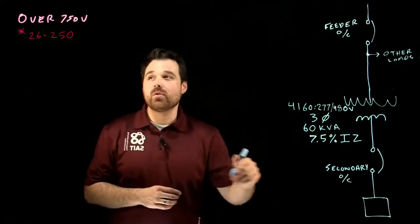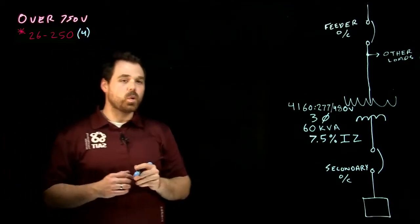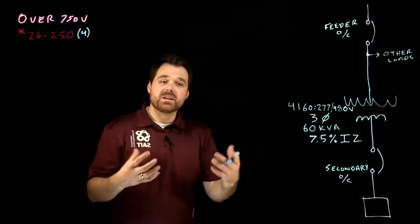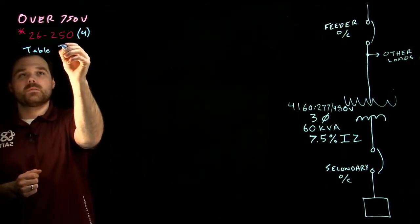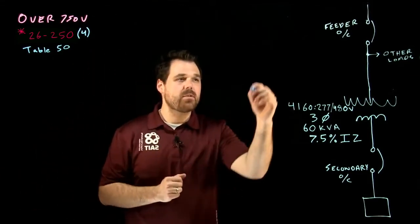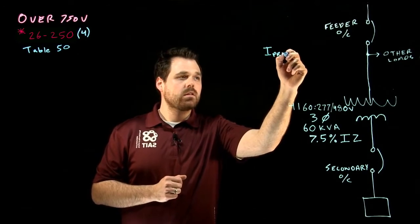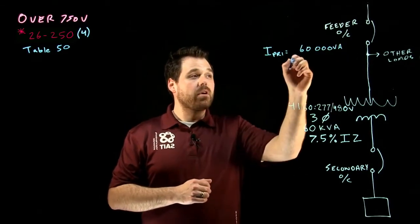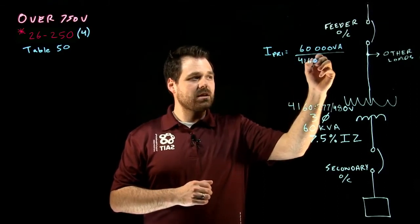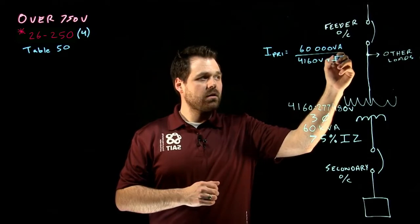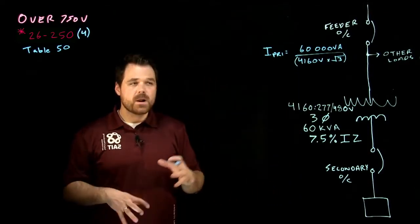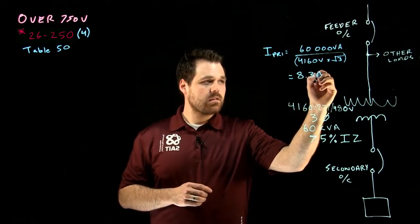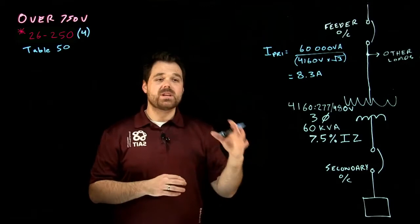Because we're dealing with a secondary overcurrent, we're actually going to spend most of our time in subrule 4. We go to 26,252, subrule 4, it says use the stuff based off of table 50. What we want to do is solve for our I primary. We're going to go I primary equals the VA, 60,000 VA. We're going to divide that by the voltage, which is 4160 volts, multiplied by root three. I like to put the bottom side there in brackets. Root three because it's a three-phase transformer, we get an I primary of 8.3 amps.